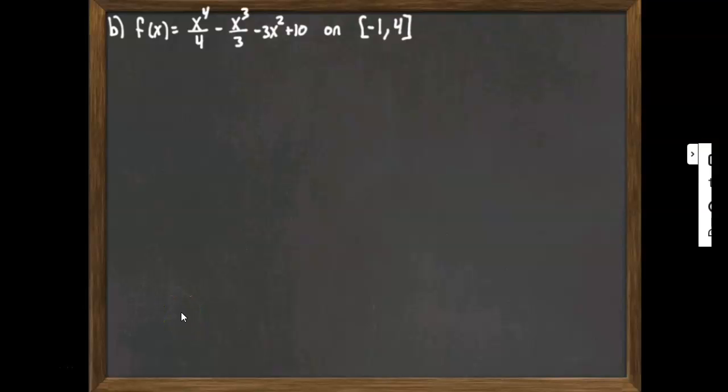Okay. In this next example, we're looking once again at another polynomial. This one happens to be a little bit more complicated, but the idea is still the same. We want to find the absolute max and min on the interval, in this case -1 to 4.